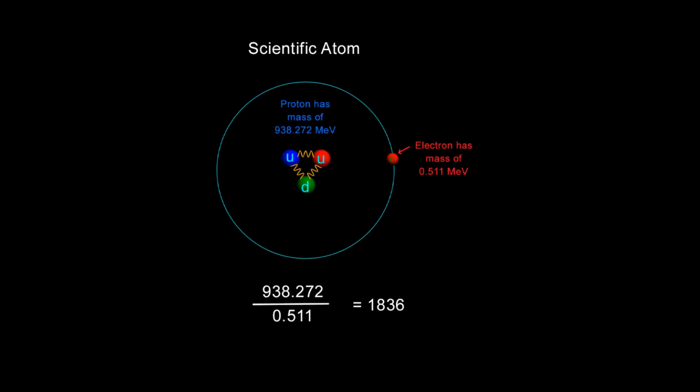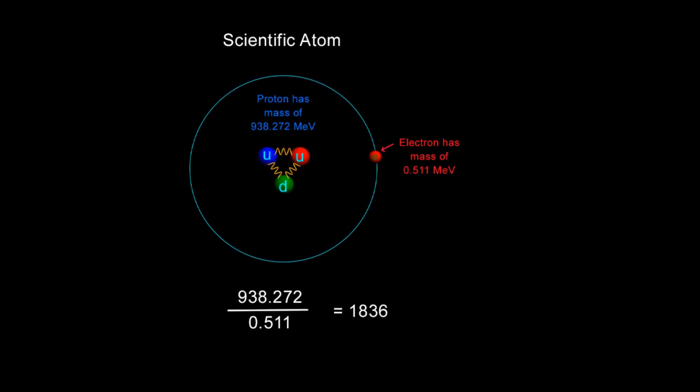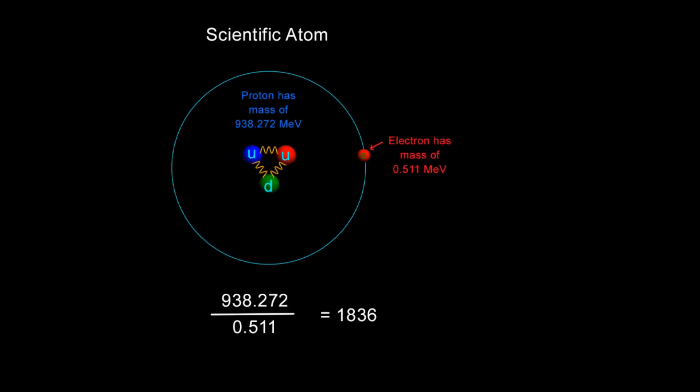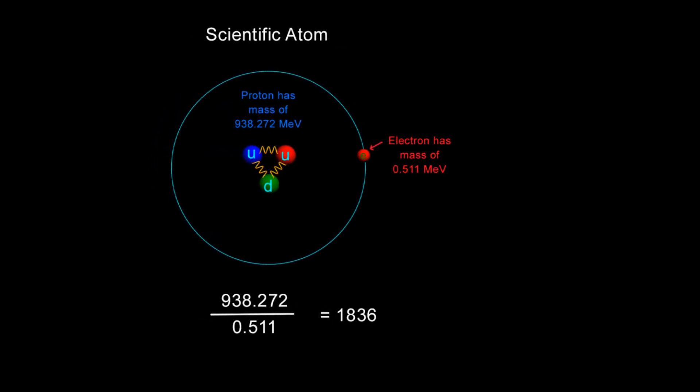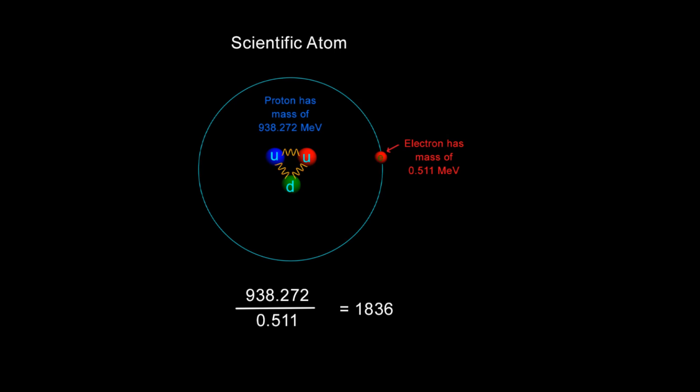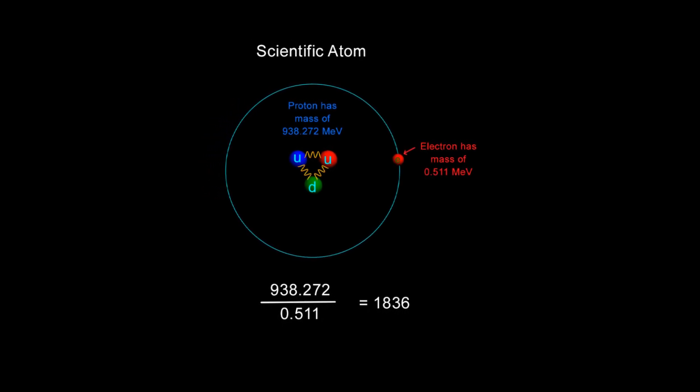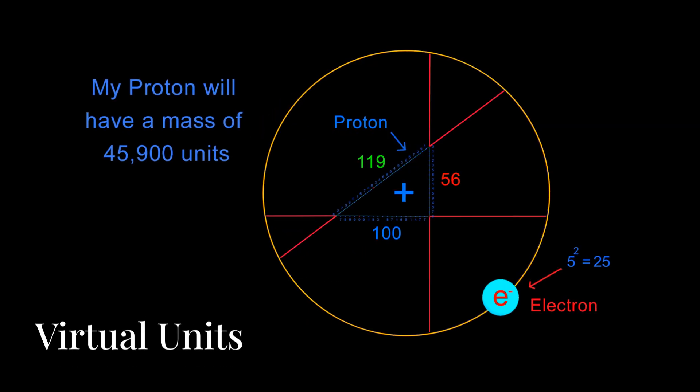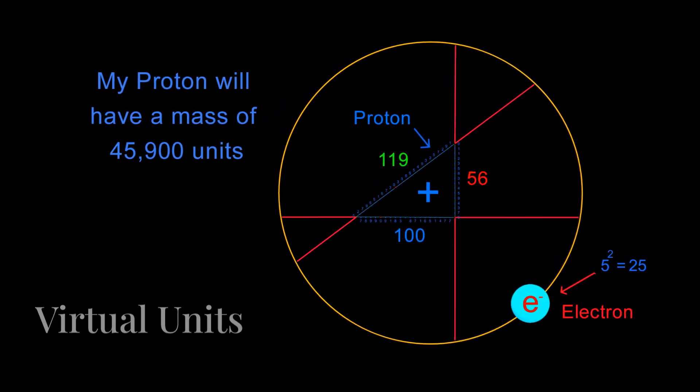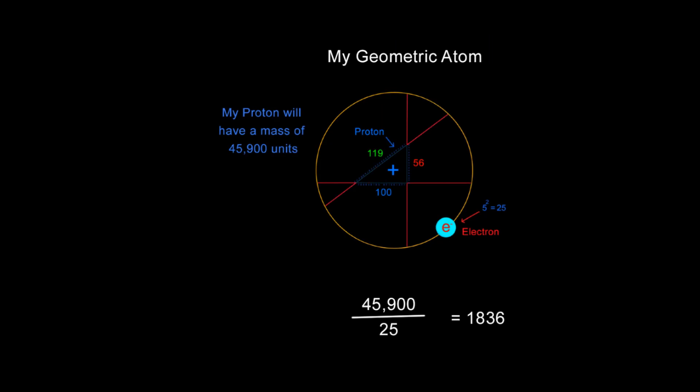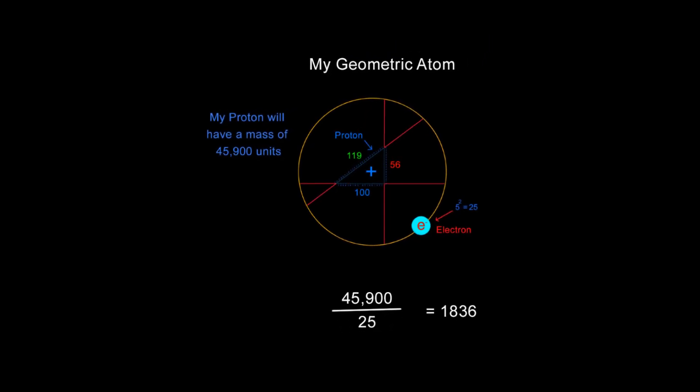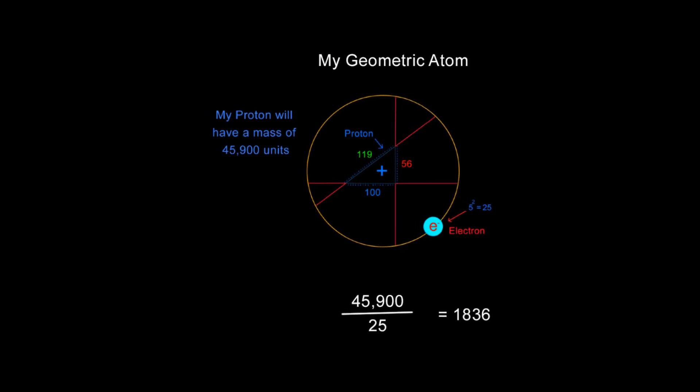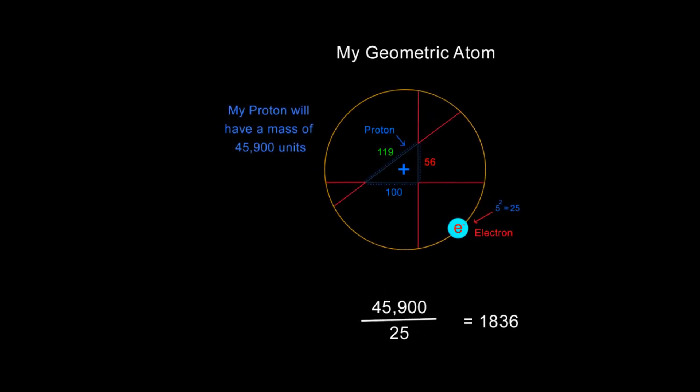938.272 divided by 0.511 is 1,836. When physicists measure an electron and a proton in the real world, they find that the proton is 1,836 times more massive than the electron. My proton is 45,900 and my electron is 25. I will show you the formula that AI used soon. 45,900 divided by 25 is exactly 1,836. I was truly stunned when it showed me this. It had taken my work to the next level.